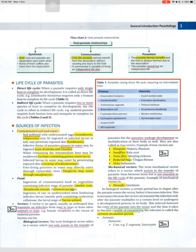Sources of infection include contaminated soil and water. Soil polluted with embryonated eggs of roundworm and whipworm may be ingested, or infected larvae in soil may penetrate exposed skin (hookworm). Free-living forms of parasites present in water may be ingested — cysts of amoeba and Giardia. Water containing the intermediate host may be swallowed — Cyclops containing guinea worm larva. Infected larvae in water may enter by penetrating exposed skin — cercariae of Schistosoma. Free-living parasites in water may directly enter through vulnerable sites — Naegleria may enter through the nasopharynx.